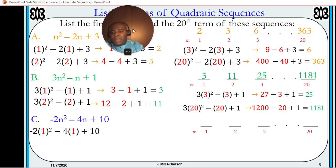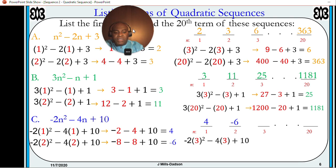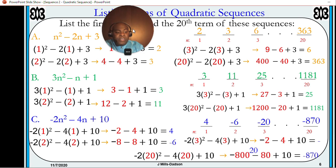Last one. Using 1, positive 4. Using 2, negative 6. Using 3, negative 20. And using 20, negative 870.